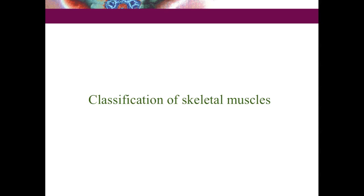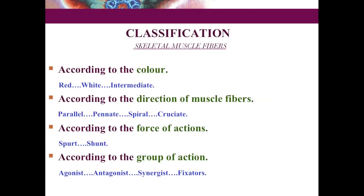After studying the basic features of skeletal muscle — origin, insertion, belly, and tendon — let us move on to classification of skeletal muscles. Skeletal muscles are classified according to color, direction of muscle fibers, force of action, and group of action.